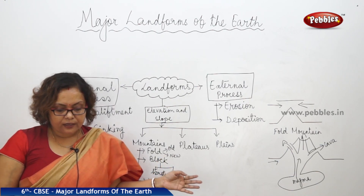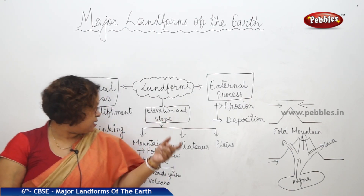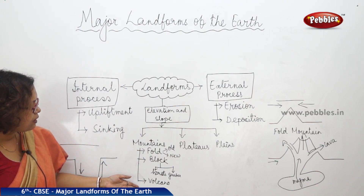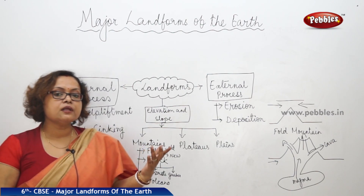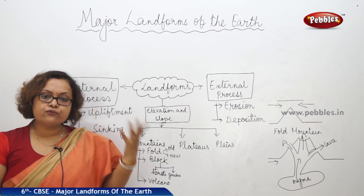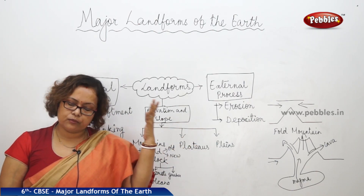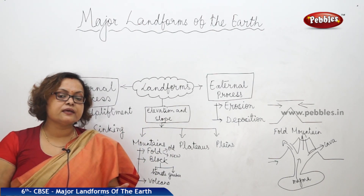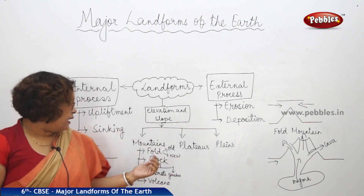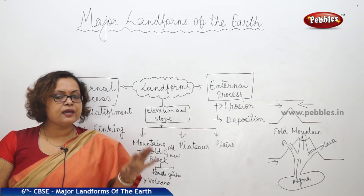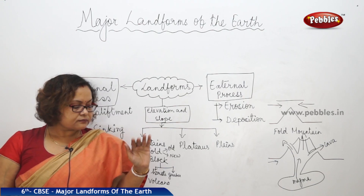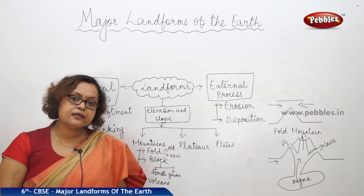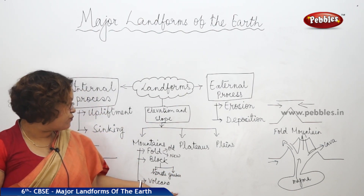There are different types of mountains: fold mountains, block mountains, and volcanic mountains. Fold mountains can be young or old — young fold mountains include Mount Everest and the Himalayas, while old fold mountains in India include the Aravallis. Block mountains include the Satpuras in India and the Black Forest in Germany. Volcanic mountains are another type.